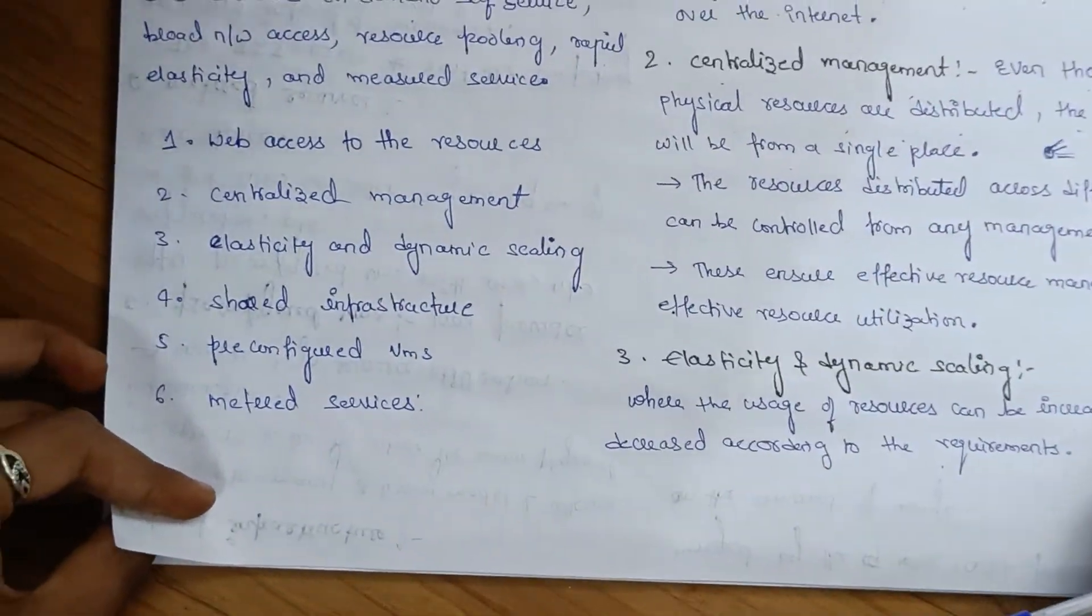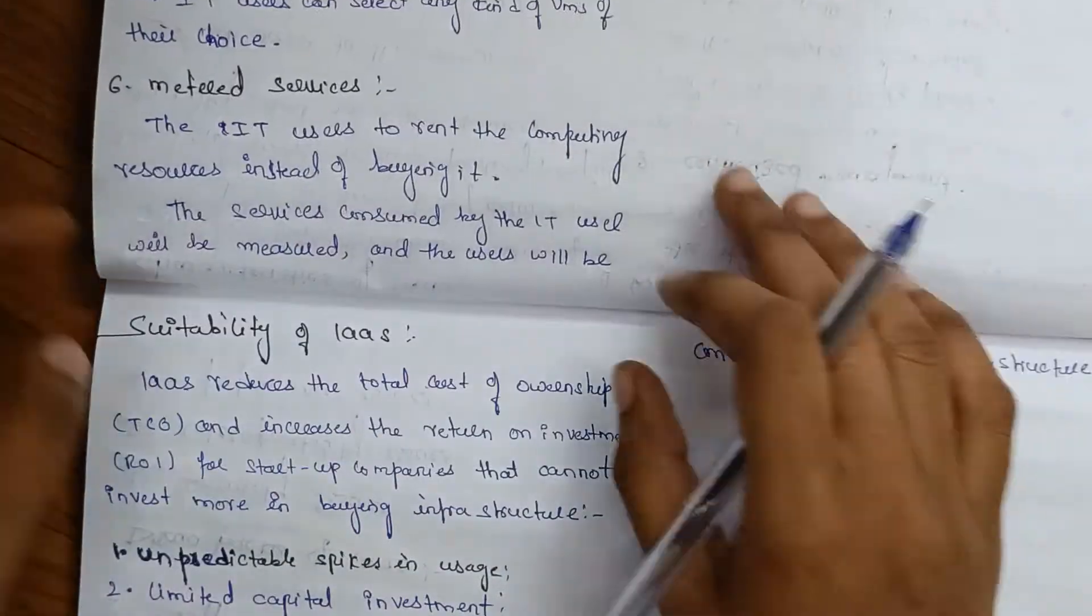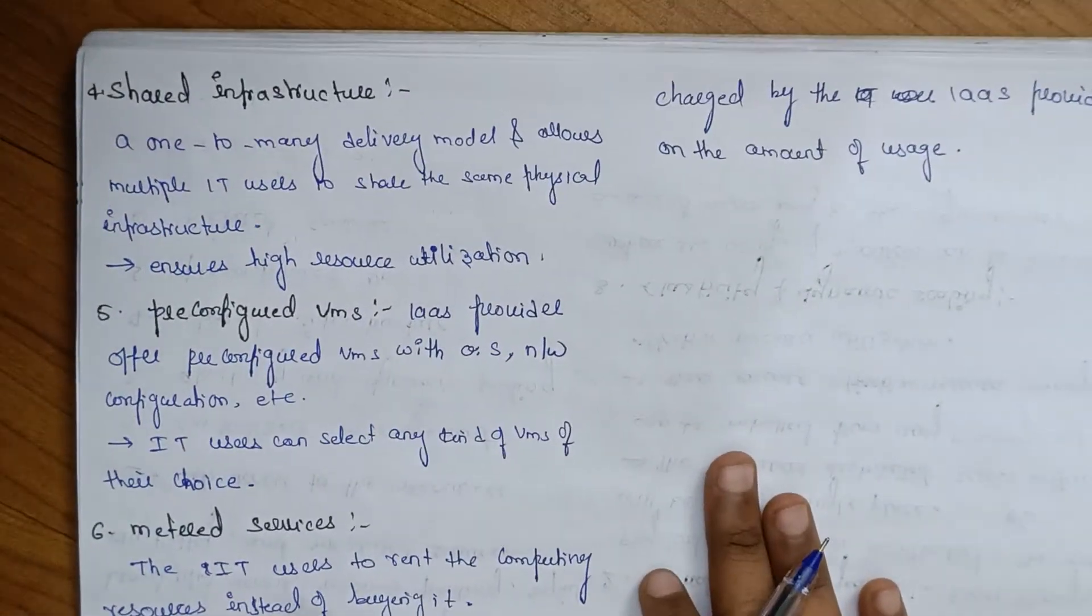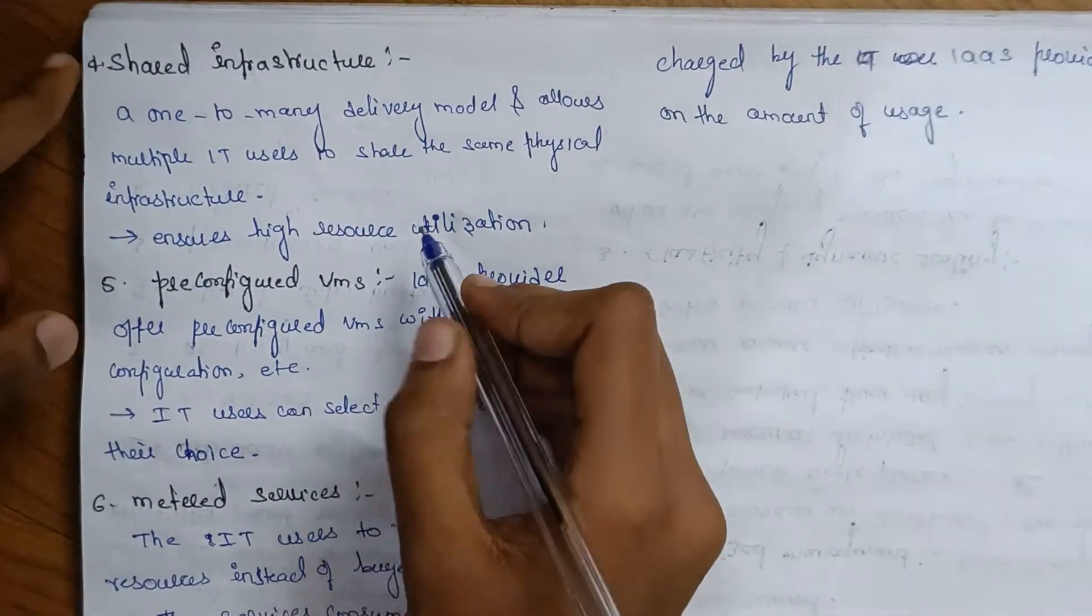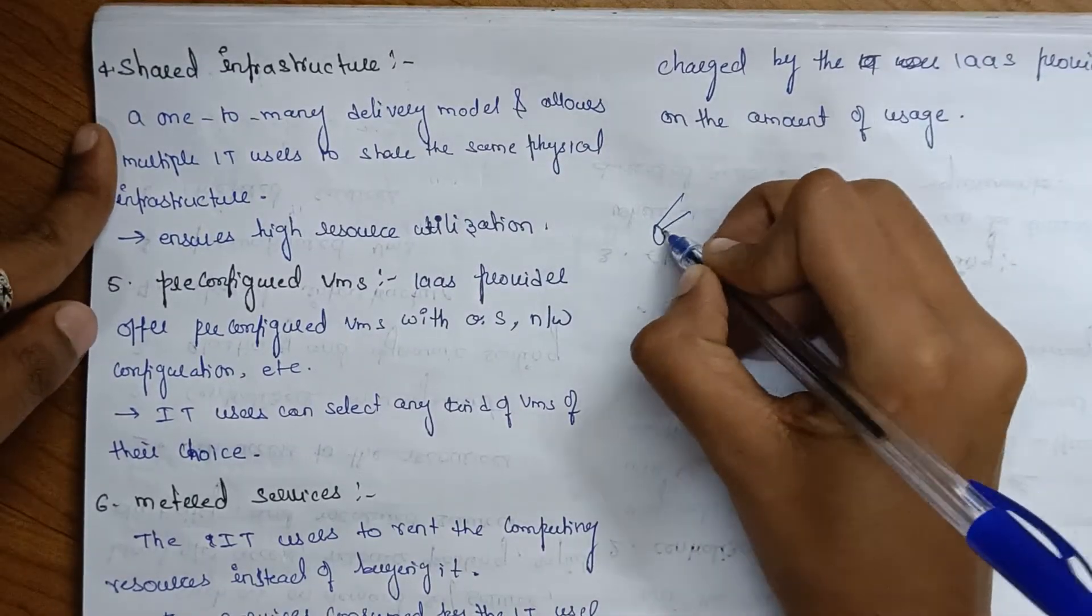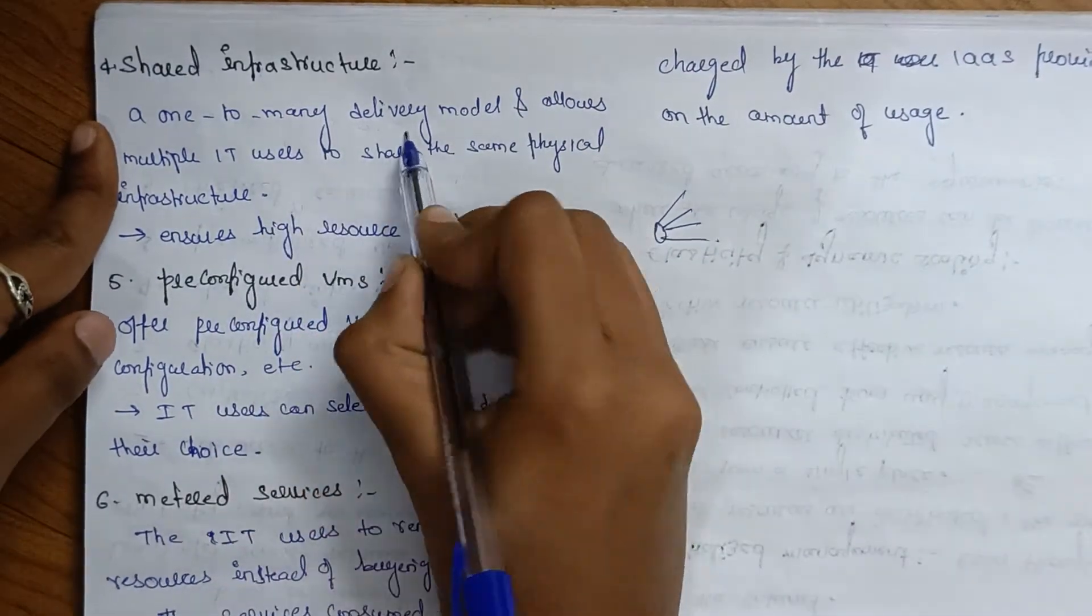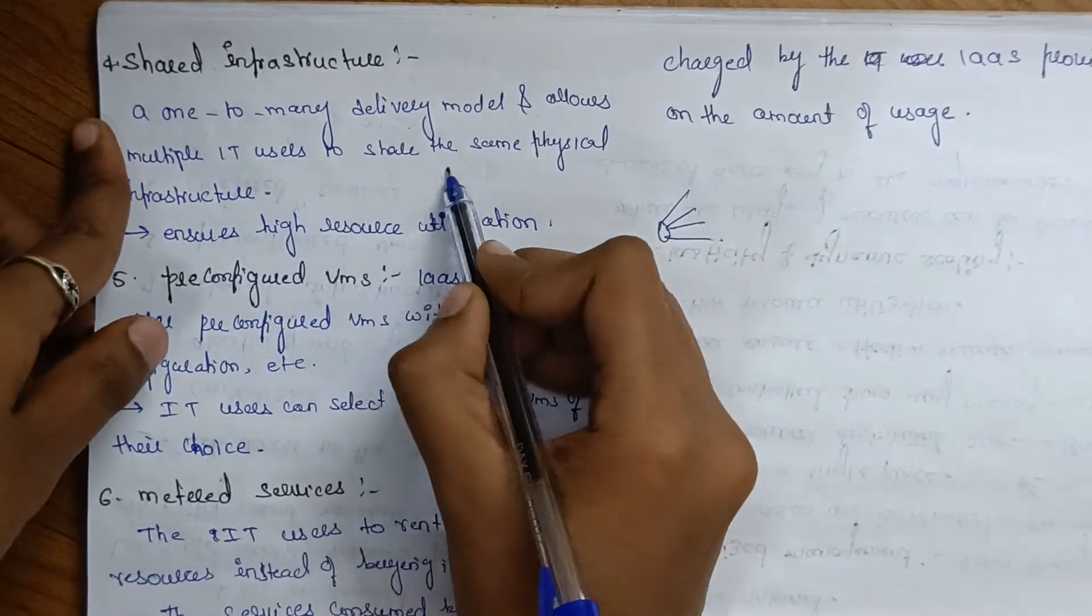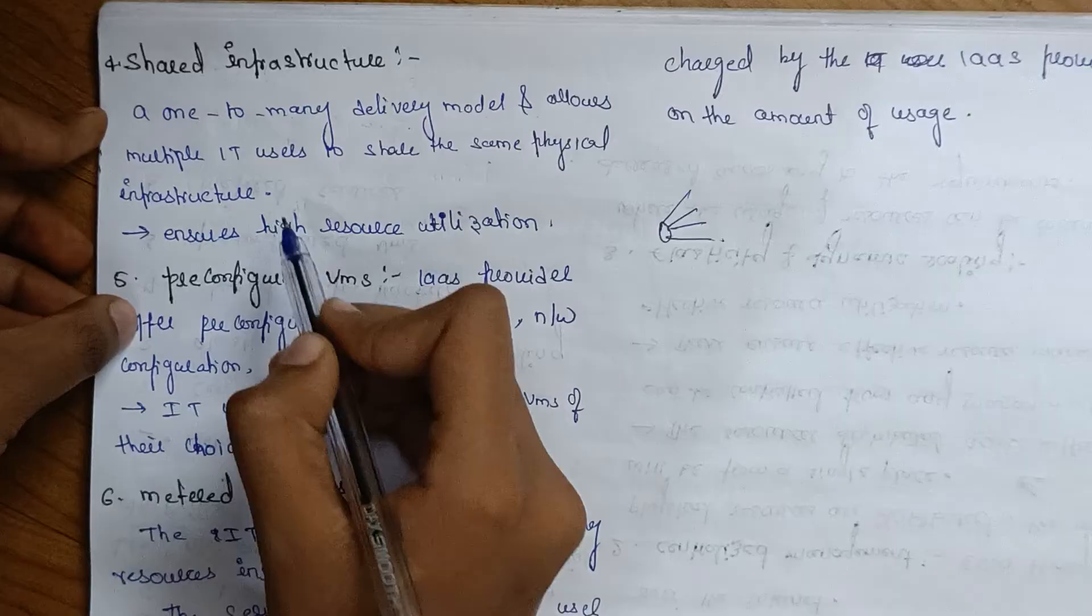Shared infrastructure means a one-to-many delivery model that allows multiple IT users to share the same physical infrastructure. One infrastructure can be shared by many users.